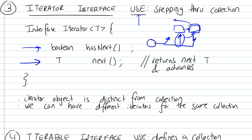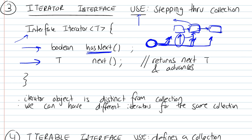The iterator interface has just two functions. The first function is hasNext. If you're going to implement the iterator interface, you're going to have to define the hasNext function, and this should return a Boolean saying whether or not there is a next element in the list. The iterator is like a plug-in onto your list that steps through it. Once it reaches the end and you call hasNext, you return false because there is no element after the final one.